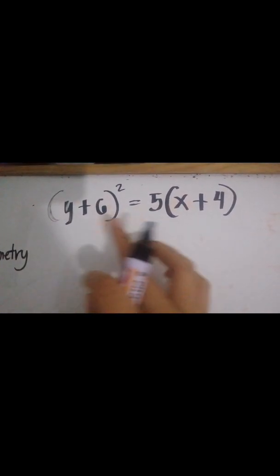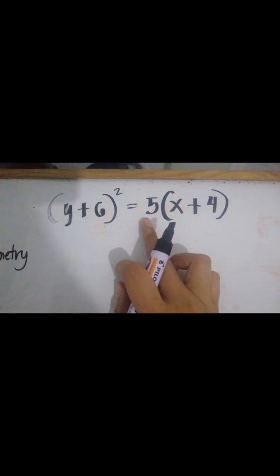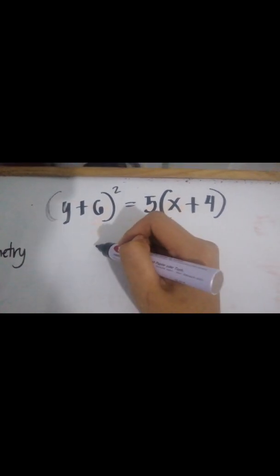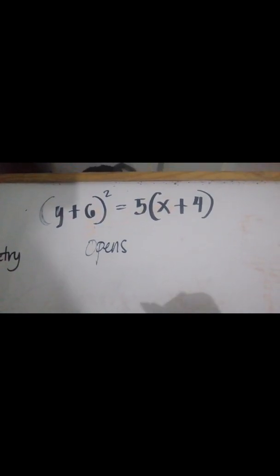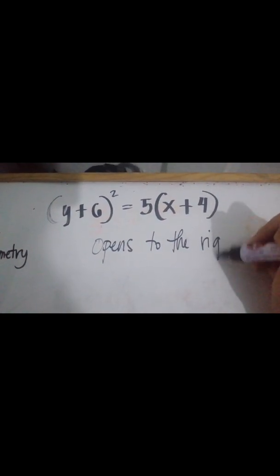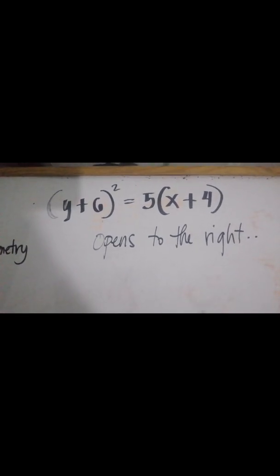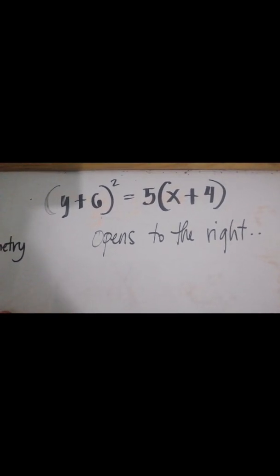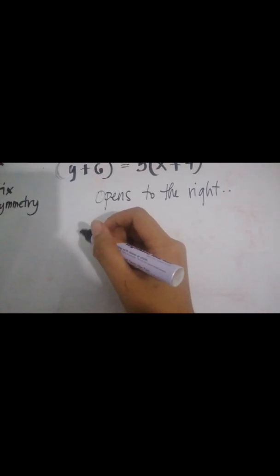Just by looking at our equation, we have y positive. Therefore, we can already determine that our parabola opens to the right. Next, we determine our vertex.